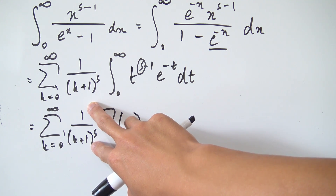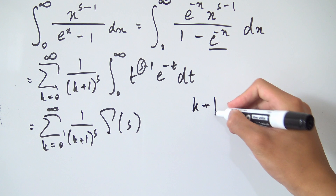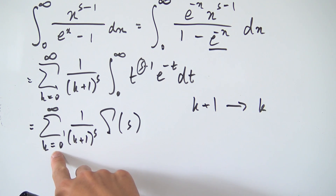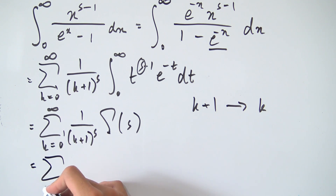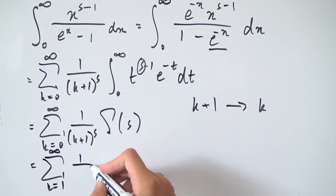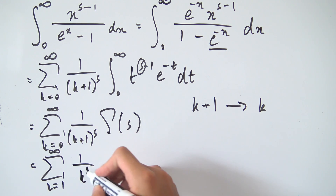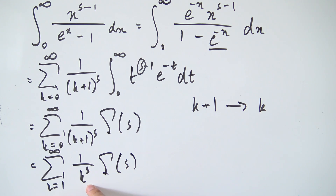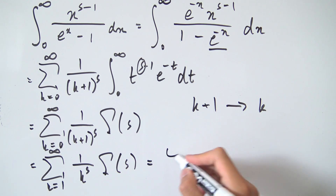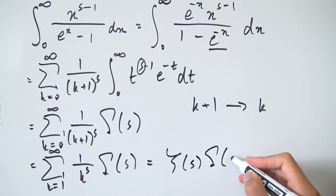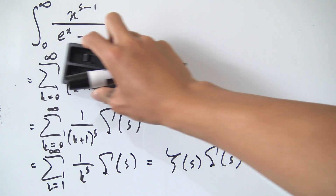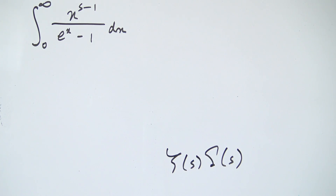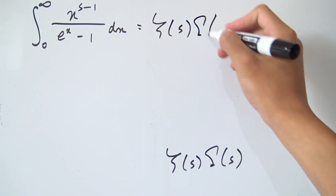We can simplify further by shifting the index: letting k plus 1 become k means k now runs from 1 to infinity. So we have the sum from k equals 1 to infinity of 1 over k to the s, times gamma of s. That sum is exactly the Riemann zeta function, so this simplifies to zeta of s times gamma of s. That's what our original integral evaluates to.